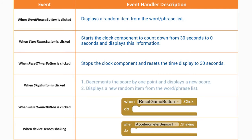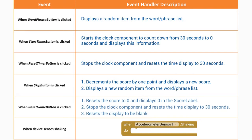Item number one, we need to be able to decrement the score by one point and display that new score. For our second item, we'll need to display a new random item from the word phrase list. When we click on the reset game button, three different items occur: we'll reset the score back to zero and display zero in the score label, we'll stop the clock component and reset the time display back to 30 seconds, and we'll reset the display to be blank.